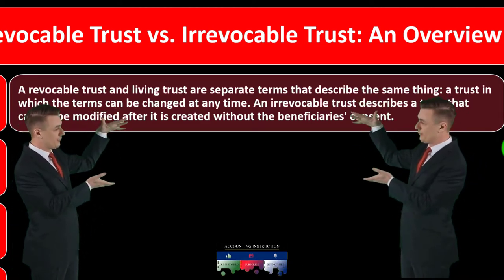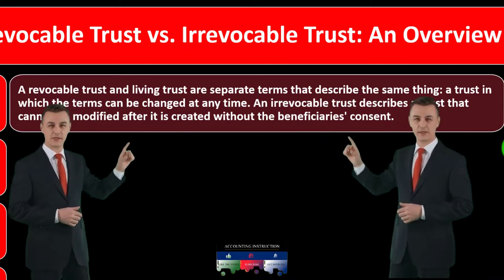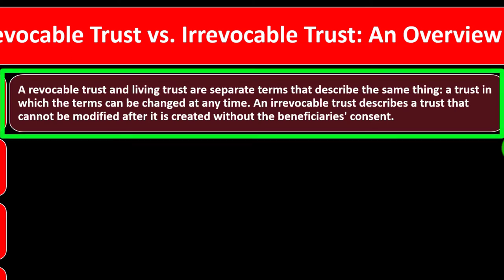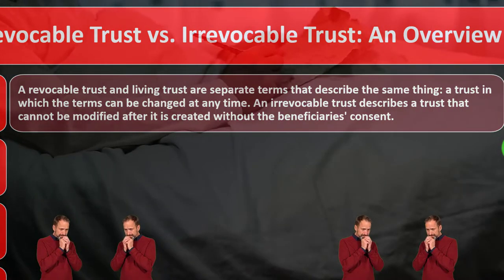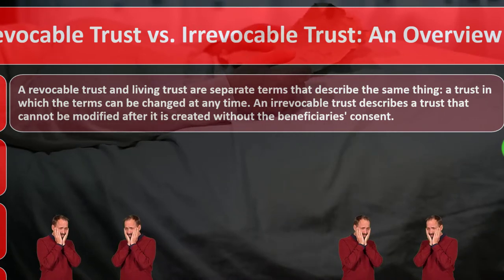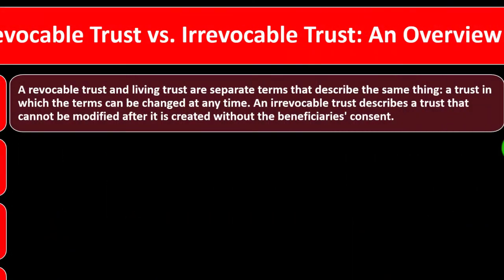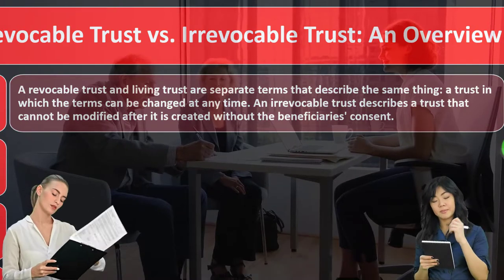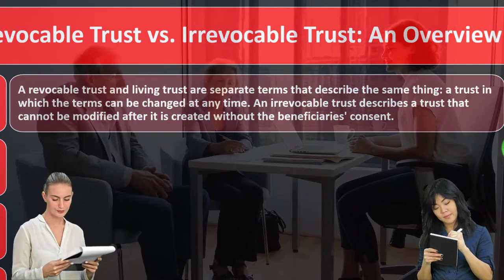Whether the trust owner still has control over assets has implications for estate planning. One goal of estate planning is to make it easier to go through probate — before we die, we want to make it as easy as possible for loved ones to allocate assets according to our wishes and potentially lower estate taxes. A will can still require going through probate, so setting up a trust is one way to make that process easier or bypass it to some degree.